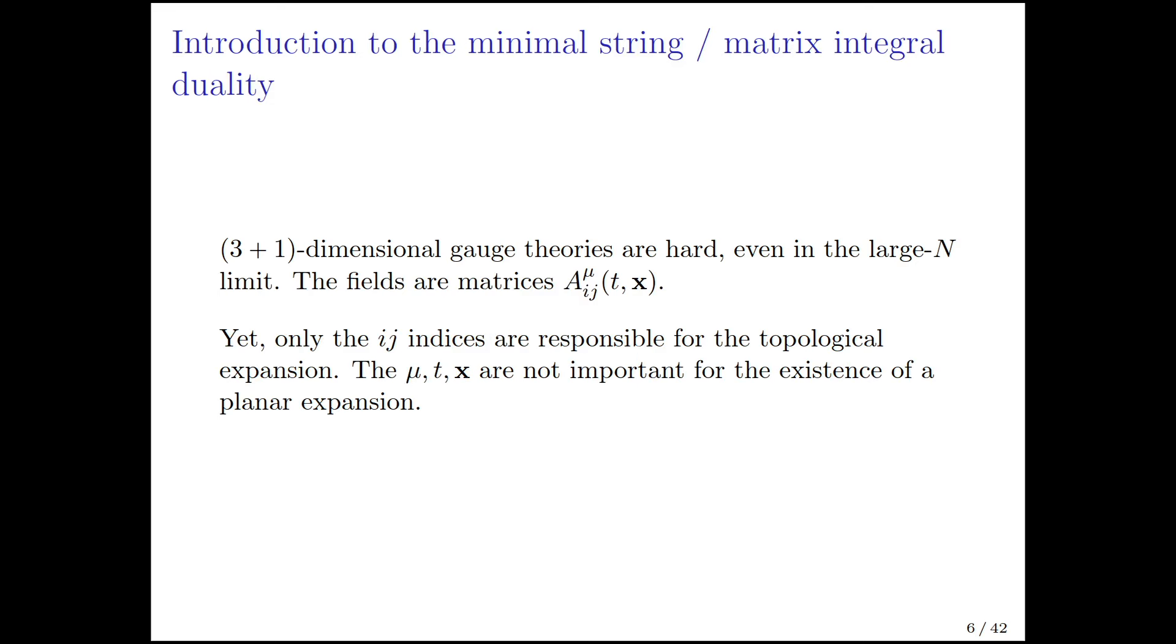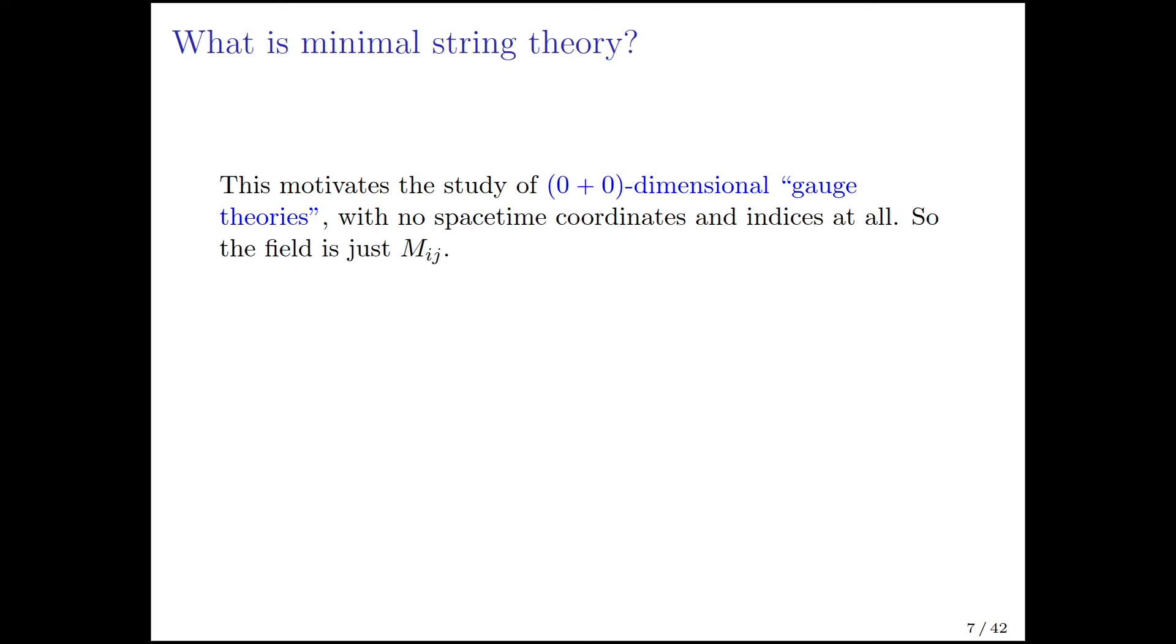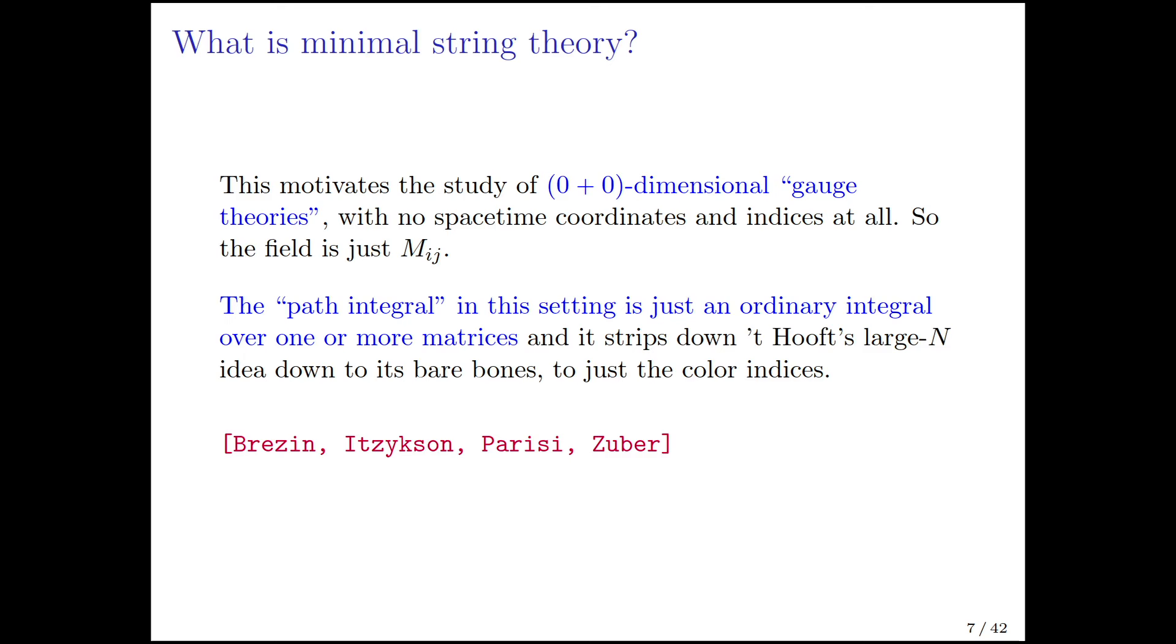Here's a brief introduction to the minimal string duality. The first point is that 3 plus 1 dimensional gauge theories are hard, even in the large N limit. The matrix A mu ij has color indices ij, but it also has mu, t, and x floating around. Only the ij indices are responsible for the topological expansion. This motivates the study of 0 plus 0 dimensional gauge theories, where there are no mu, t, and x, and the only field is just mij with color indices running from 1 to n. The path integral in this setting is just an ordinary integral over one or more matrices, and it strips down Tuft's large N idea to its bare bones, just the color indices.